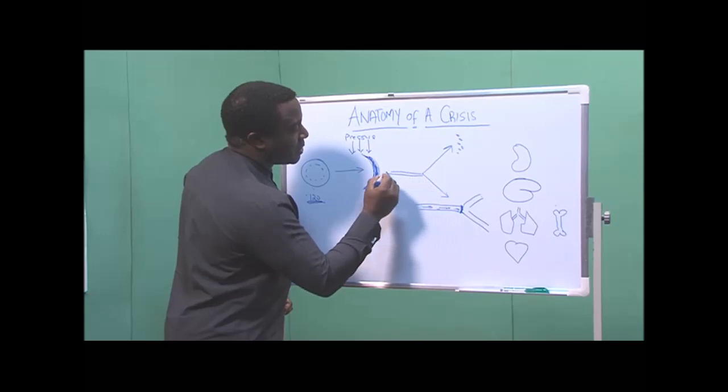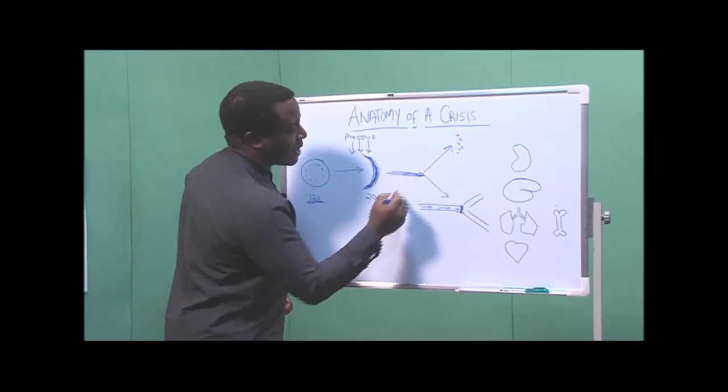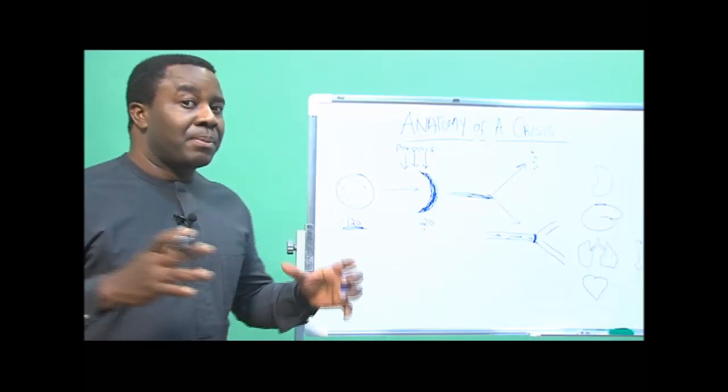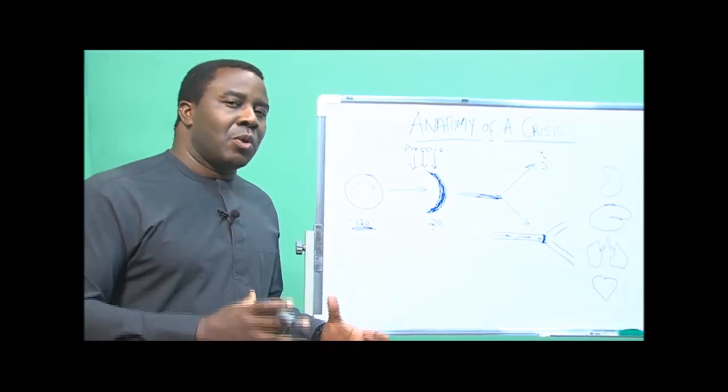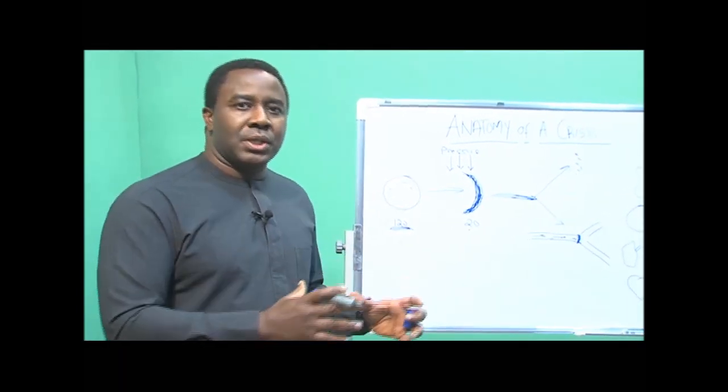Once it forms a sickle cell, one of two things can happen, and basically the two of them happen simultaneously. Usually one predominates over the other.